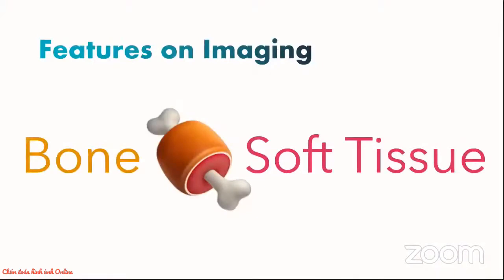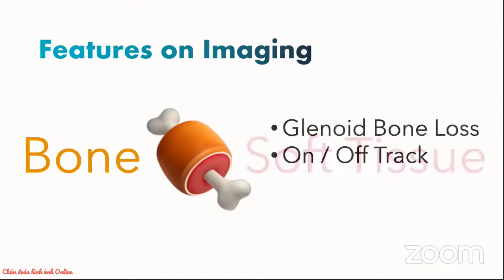From now onwards, I will be showing you several features that you need to be looking out for when assessing for shoulder instability. We will start with bone findings first, in particular demonstrating how you measure for glenoid bone loss and explaining the on-track and off-track theory.